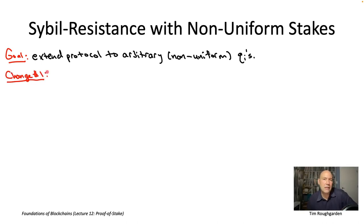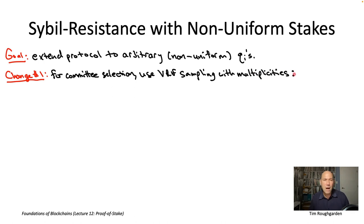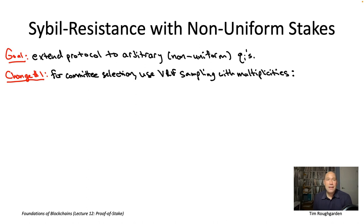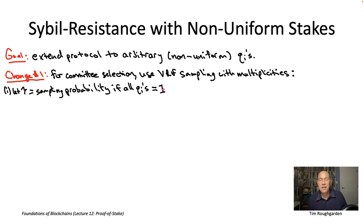Let's re-examine committee selection when we have non-uniform stake amounts. To define the committee, we'll continue to use VRFs—verifiable random functions—but we'll use the version of VRF-based sampling that samples with multiplicities, so that the higher your stake amount Q sub i, the higher the multiplicity with which you'll typically be sampled. Basically, if someone stakes ten coins, we treat them exactly as if they registered instead as ten sybils with one coin each. We use tau to denote the sampling probability for the special case where everybody has the same minimum stake amount of one.